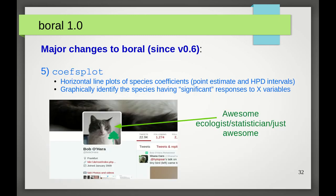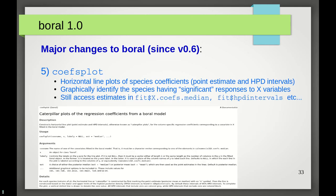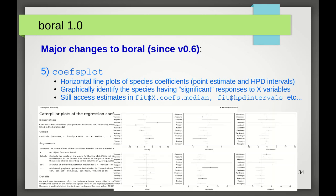Number five. Thanks to Bob O'Hara, who is an awesome ecologist-slash-statistician-slash-just-awesome-cat, there is now a COEFS function that allows users to straightforwardly construct caterpillar plots for point estimates and credible intervals for the species coefficients. The function is by no means perfect, but it's a start to at least graphically identify the significant species. Of course, you can still access the point estimates and the HPD intervals themselves from the fitted model. For example, fit dollar sign, x.coefs.median, and so on.